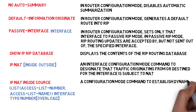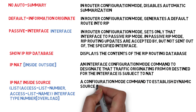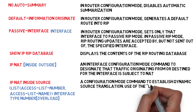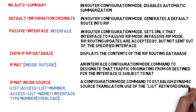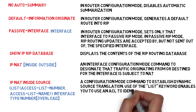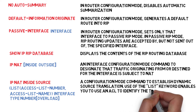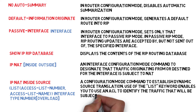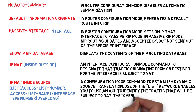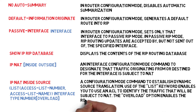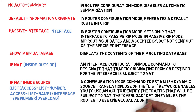IP NAT inside source list — access-list number or access-list name — interface type number, overload. A configuration mode command to establish dynamic source translation. Use of the list keyword enables you to use an ACL to identify the traffic that will be subject to NAT. The overload option enables the router to use one global address for many local addresses.